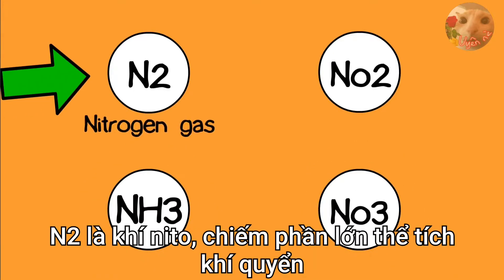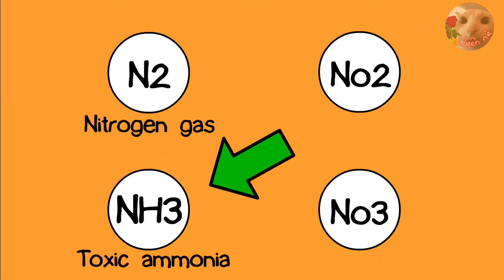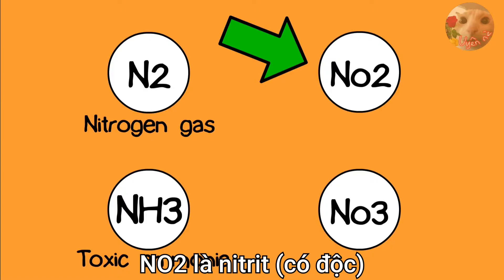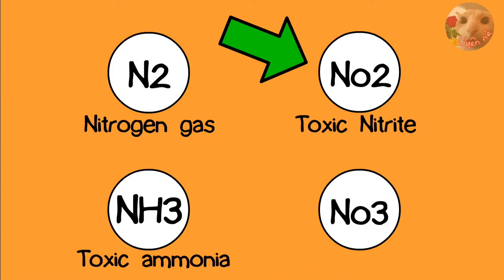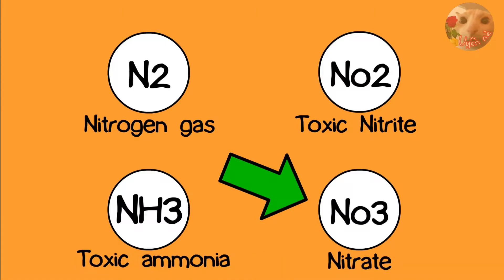N2 is nitrogen gas that makes up most of the atmosphere. NH3 is toxic ammonia. NO2 is toxic nitrite. And NO3 is not very toxic and kind of wonderful nitrate.